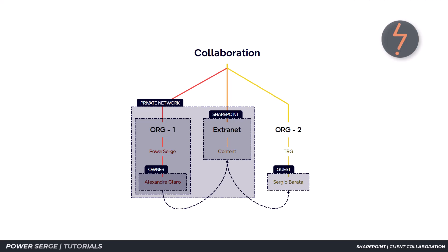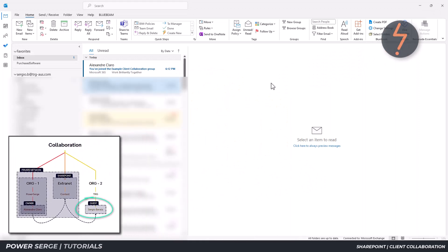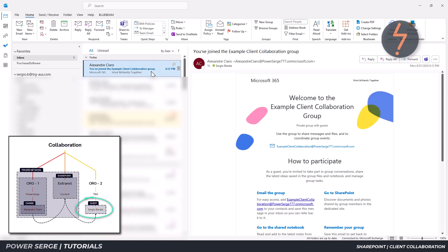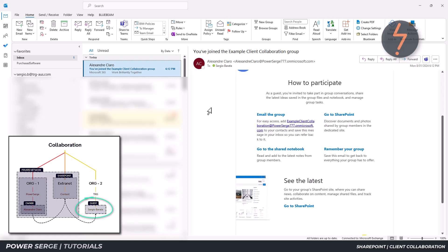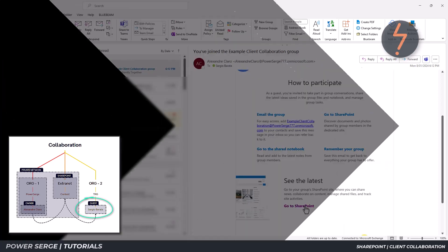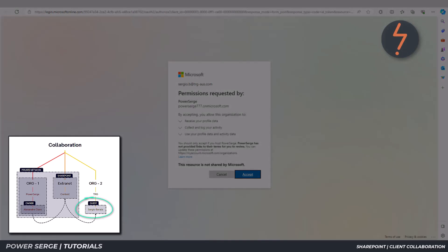I will now log in as Sergio. Remember, in this simulation, that's the role of the guest. This is important so that you get an idea of what your client will see when you invite them to your site. In Outlook, the guest receives an auto-generated welcome email. This provides instruction on how to connect. Click and go to SharePoint.